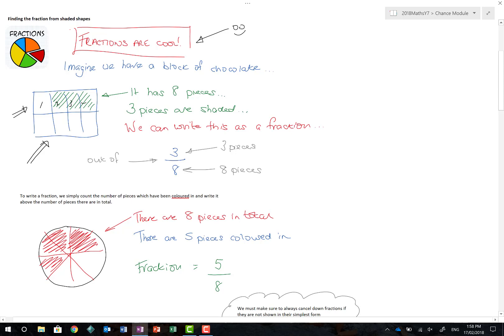One, two, three, four, five, six, seven, and eight. And as you can see, as the question says here, three pieces are in fact shaded. Now, when I've got three shaded out of eight, I can actually write this as a fraction.